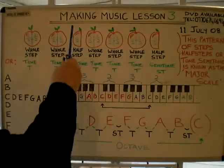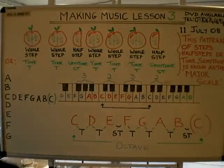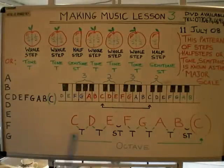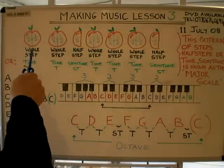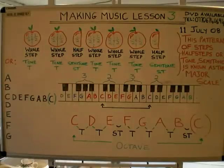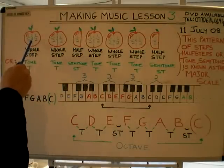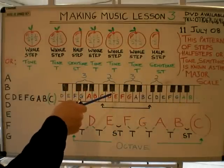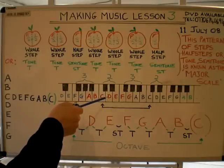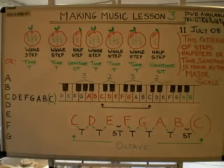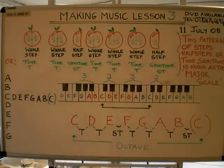Welcome again to Making Music, lesson three, Friday 11th of July 2008. I want to continue to build on where we left off from lesson two, where we were talking about whole steps, half steps, or tone and semitone. Just to recap, a whole step is made up of two halves. There is a reason why we're doing this and it's the very basis of what is known as the major scale.